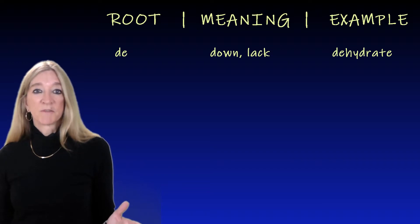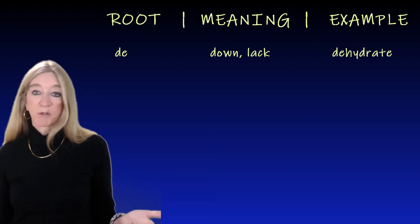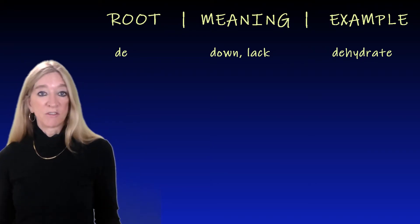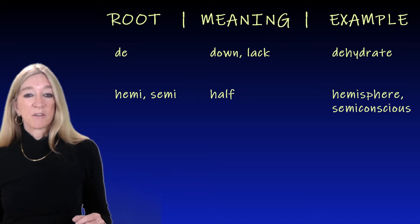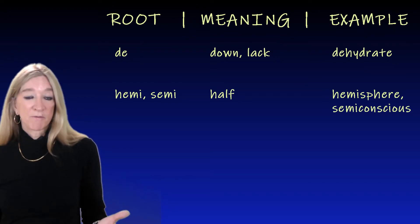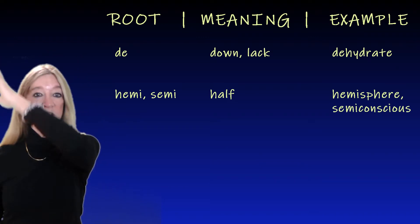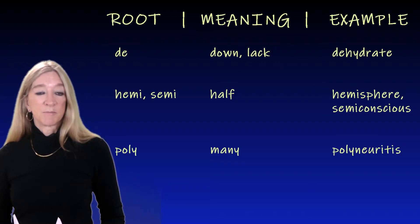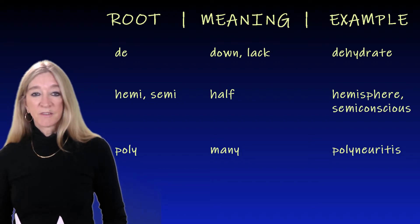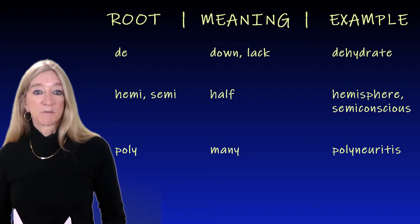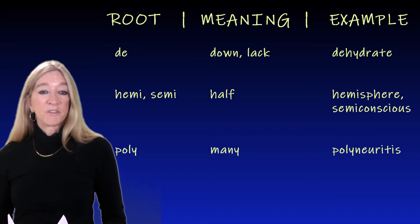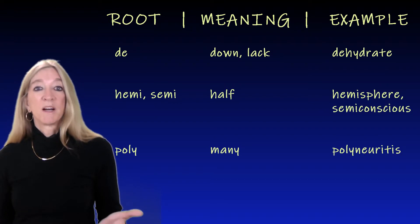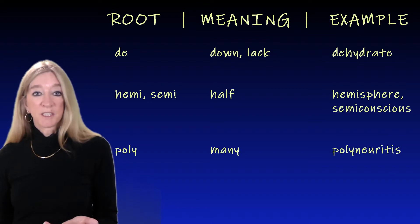You can think of countless uses of 'de' in everyday life: destruction, depersonalize, demystify, detoxify — to bring the poison levels down. And the next root, 'hemi' or 'semi,' meaning half, as in hemisphere — two hemispheres in the brain — or semi-conscious. The next root, 'poly,' meaning many. Polyneuritis is the inflammation of several peripheral nerves at the same time. You've seen this root in words like polygon, polychrome — many-colored — polysyllabic, and polygamy — many mates.